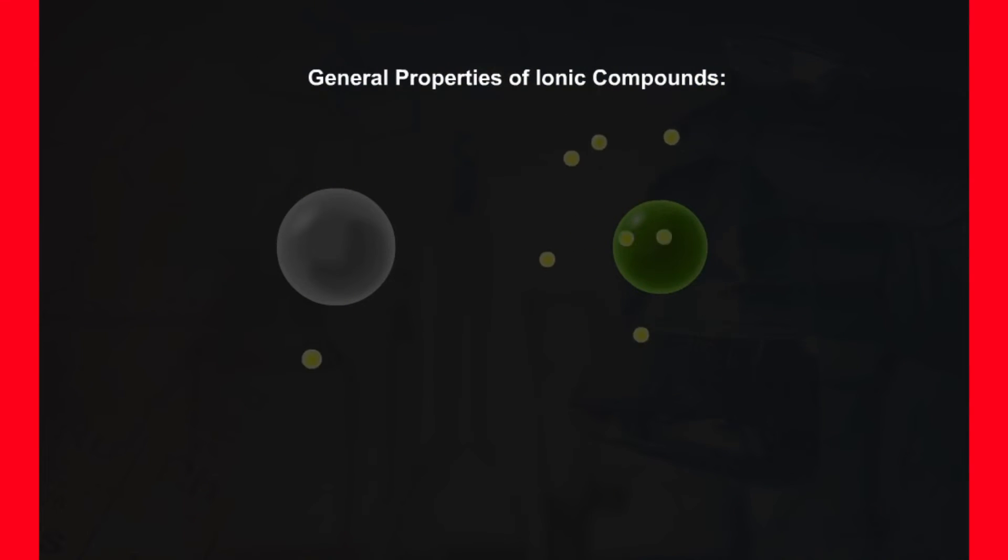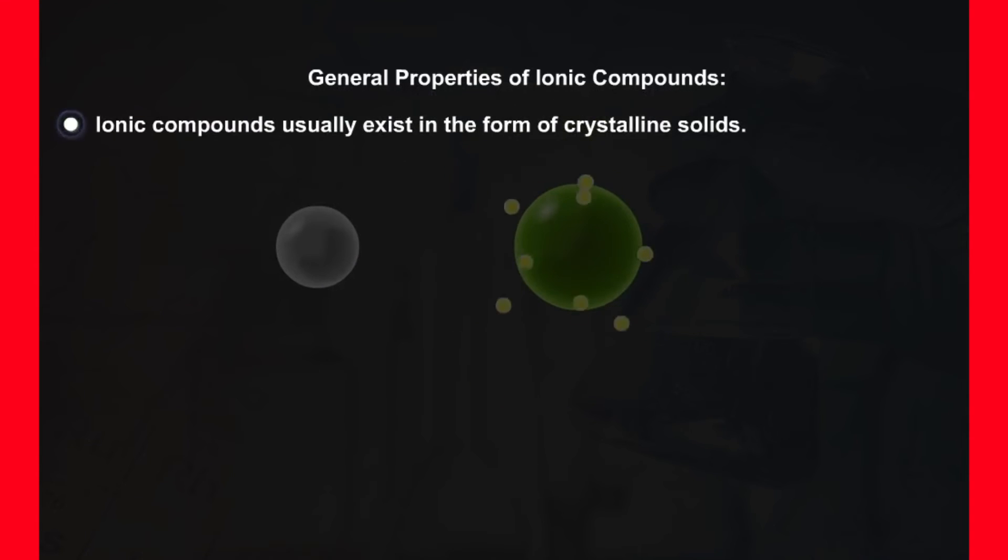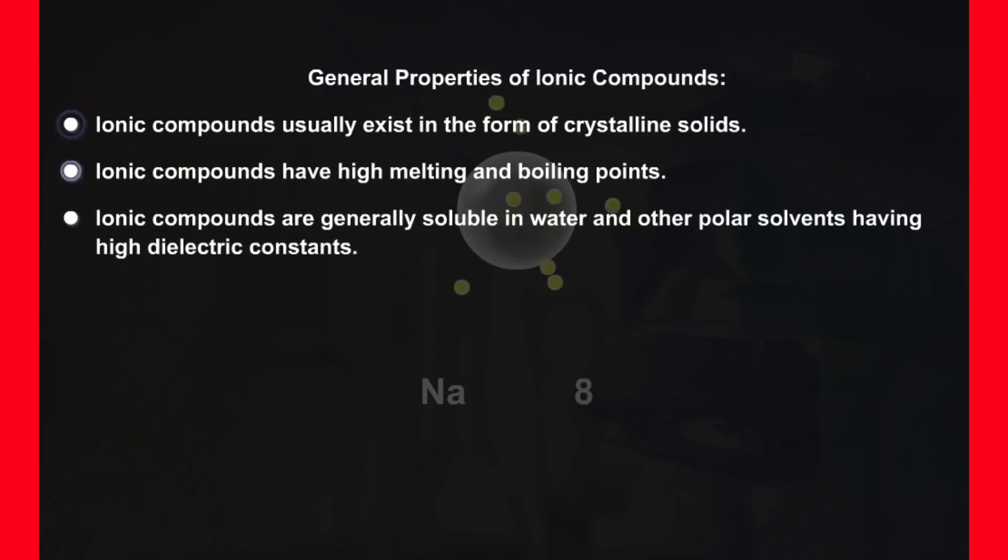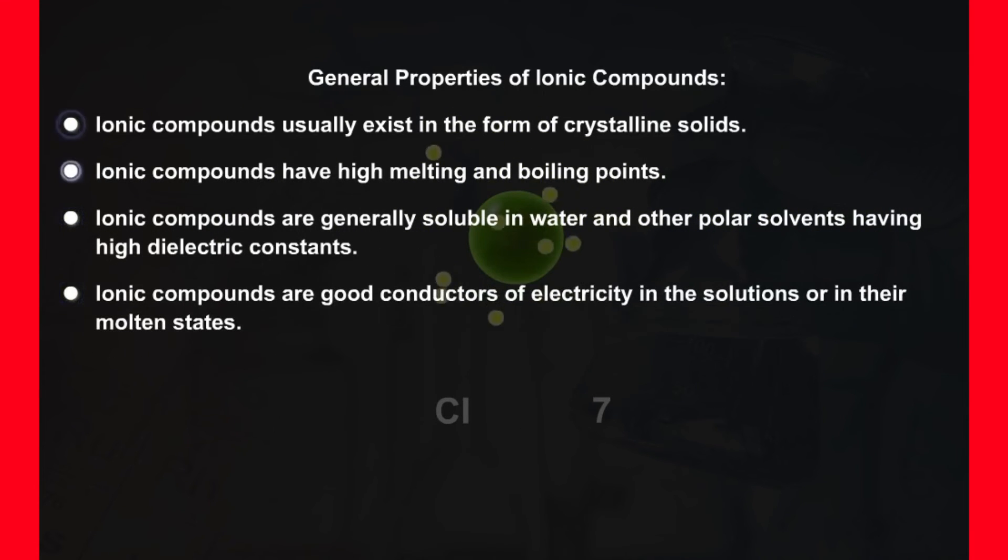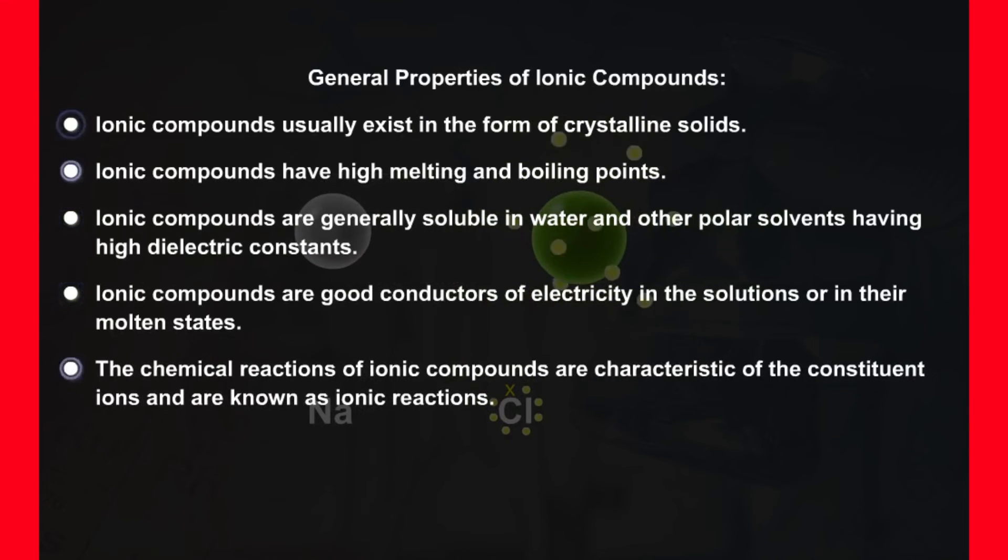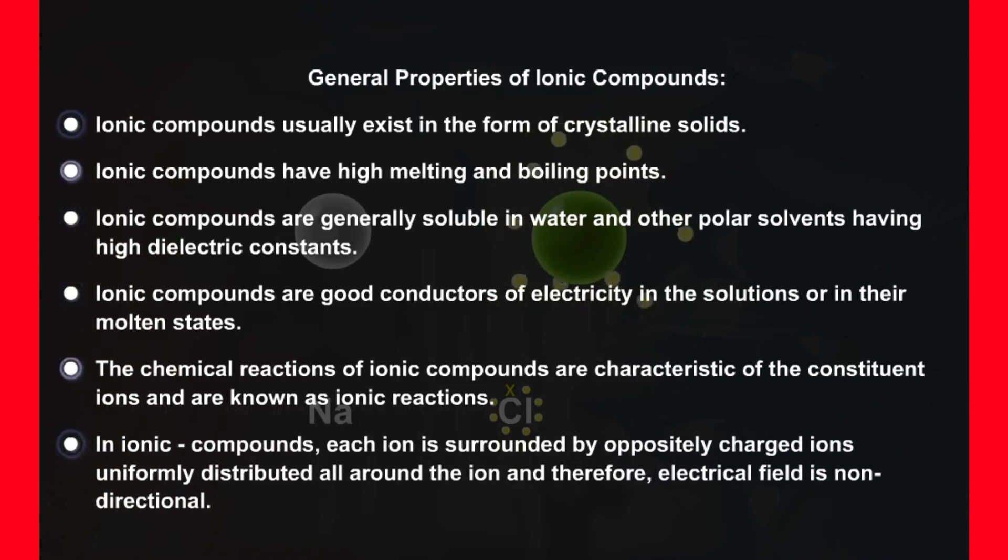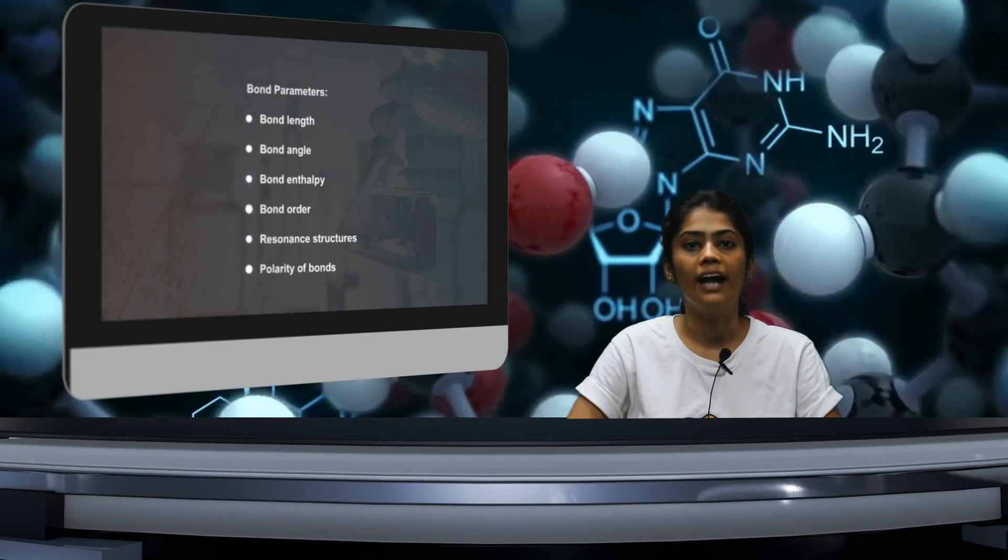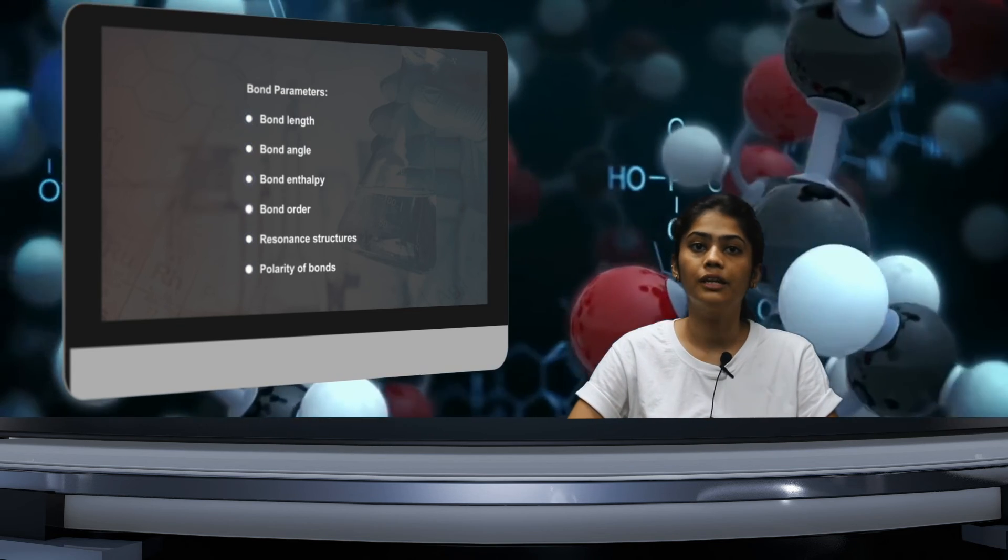Let us throw some light on the general properties of ionic compounds. Ionic compounds usually exist in the form of crystalline solids. Ionic compounds have high melting and boiling points. These compounds are generally soluble in water and other polar solvents having high dielectric constants. These compounds are good conductors of electricity in the solutions or in their molten states. The chemical reactions of ionic compounds are characteristic of the constituent ions and are known as ionic reactions. In ionic compounds, each ion is surrounded by oppositely charged ions, uniformly distributed all around the ion and therefore electrical field is non-directional. We have studied about different kinds of bonds till now. We will be looking at what are the parameters that govern these bonds. So we will be looking at the bond parameters.